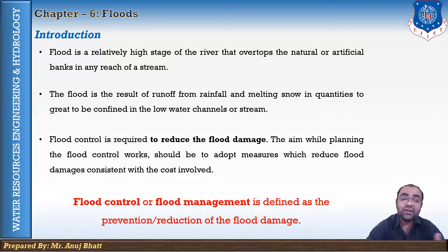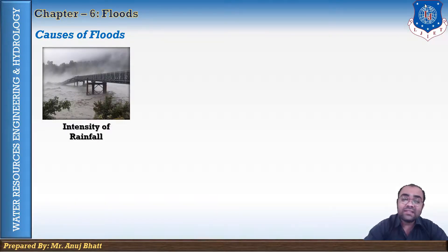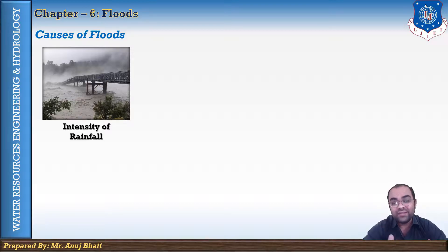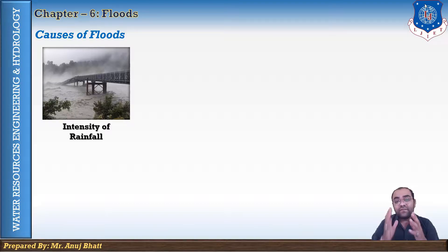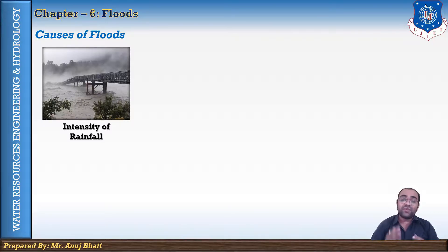Let's discuss the causes of floods. The first cause is the intensity of rainfall. Whenever there is heavy precipitation over the catchment in terms of intensity, duration, and spread, the river will carry high flow. This is the main reason a river goes into flood — the intensity of rainfall in the catchment area.